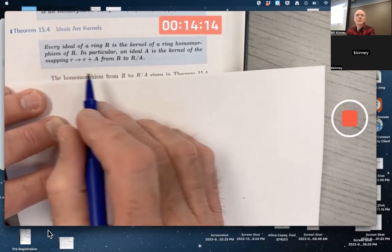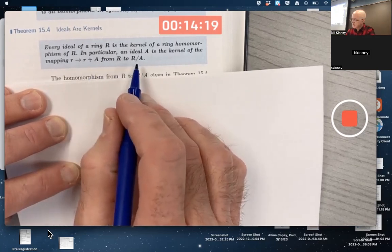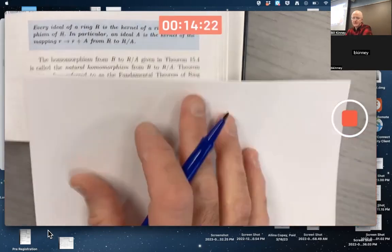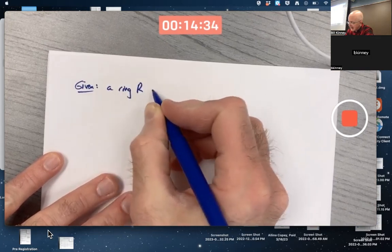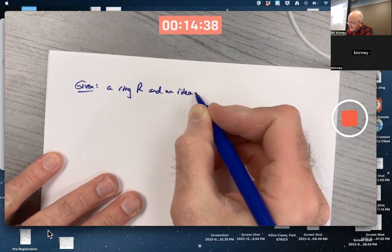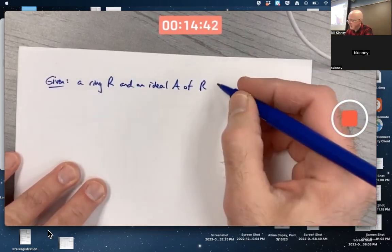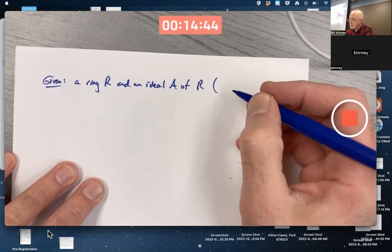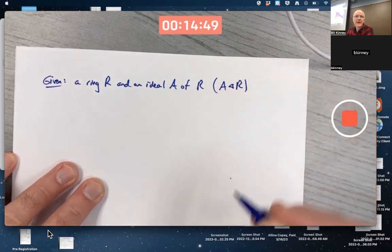This is sometimes called the projection mapping of R onto this particular factor ring. You're given a ring R and an ideal A of R. And yes, again, if you want to go ahead and use normal subgroup notation here for ideals, I'm okay with that. Again, I don't typically see ring theorists do that.